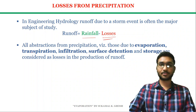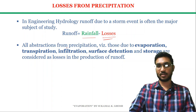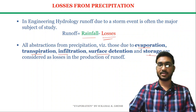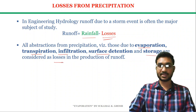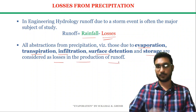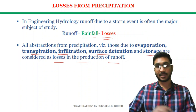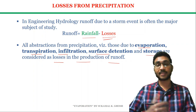All the obstructions from precipitation, such as evaporation, transpiration, infiltration, surface detention, and storage, are considered as the losses in the production of runoff. The study of runoff is very important because it directly affects the design of various hydraulic structures and thus irrigation.